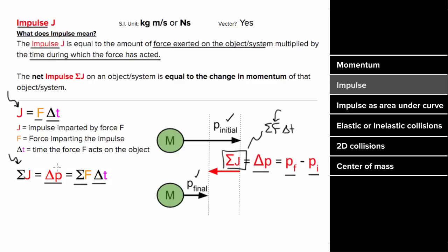Since impulse is a change in momentum and momentum is a vector, impulse is also a vector — so it can be positive or negative. The units are the same as momentum, kilograms times meters per second, or since it's also force times time, you could write the units as newtons times seconds.